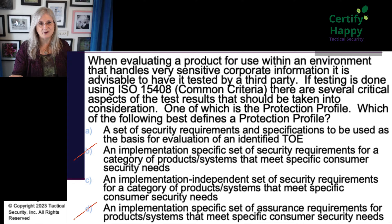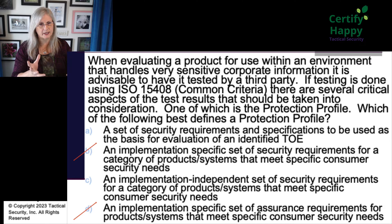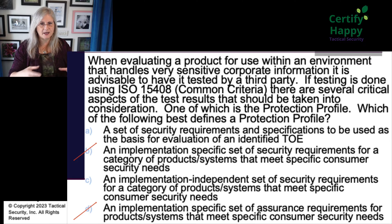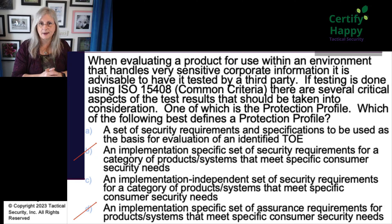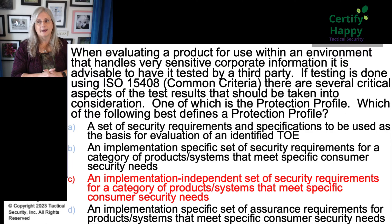C is 'an implementation independent set of specific requirements for a category of products or systems that meet specific consumer security needs.' They sound a lot alike. The difference is C seems more formal and more complete — implementation independent, security requirements, category of products, consumer needs. There's more to it. So I actually like answer C the best. And guess what? That's the right answer.